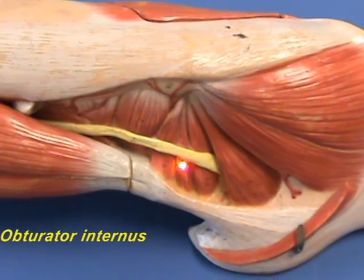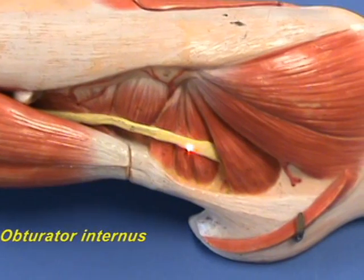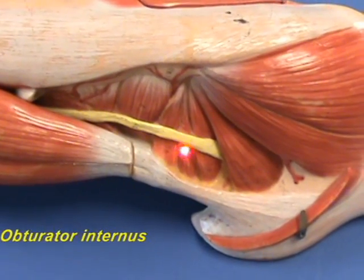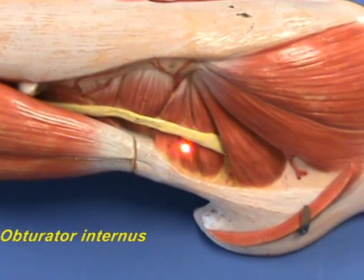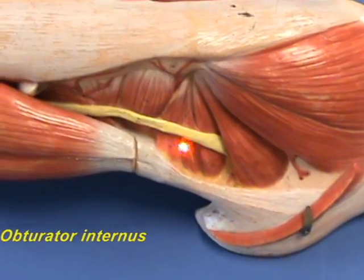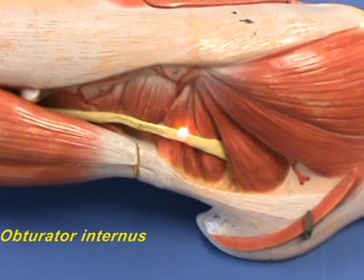The obturator internus laterally rotates the extended femur at the hip joint and abducts the flexed femur at the hip joint.